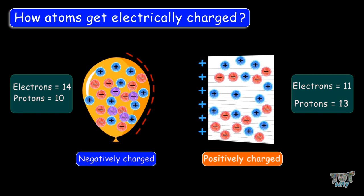So due to the rubbing of two objects, we get two types of objects: one type is negatively charged and the other is positively charged.